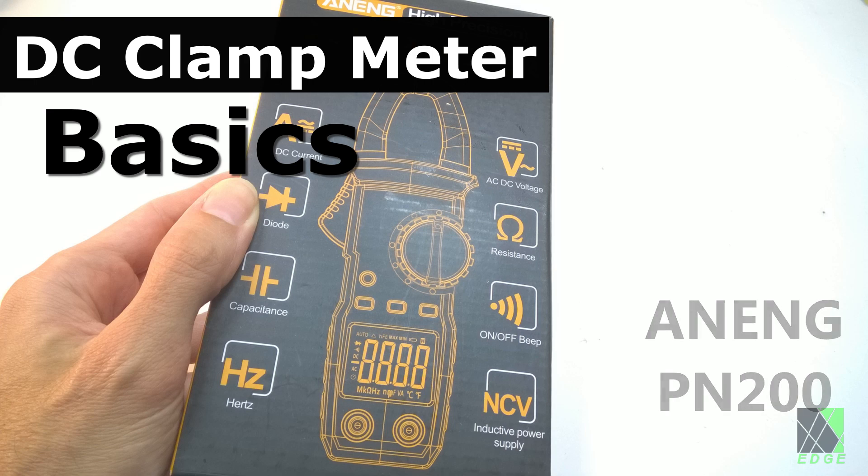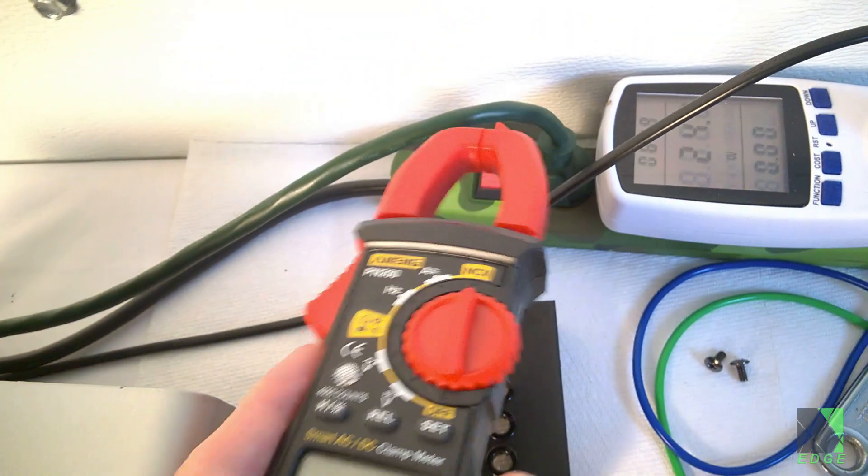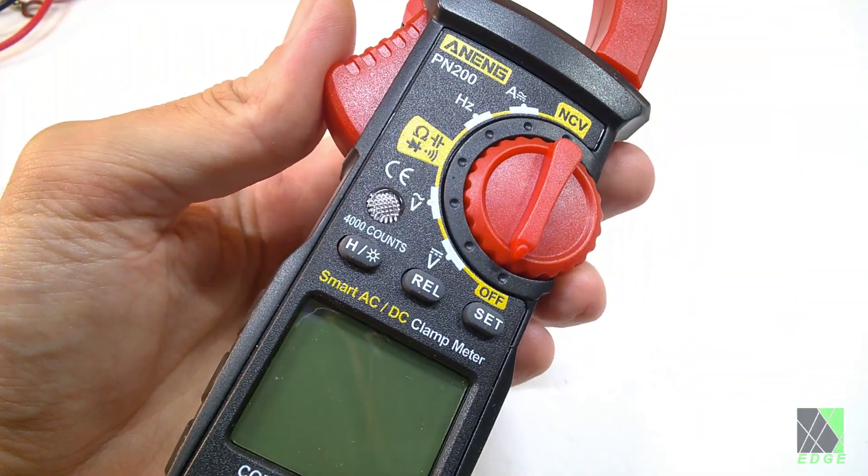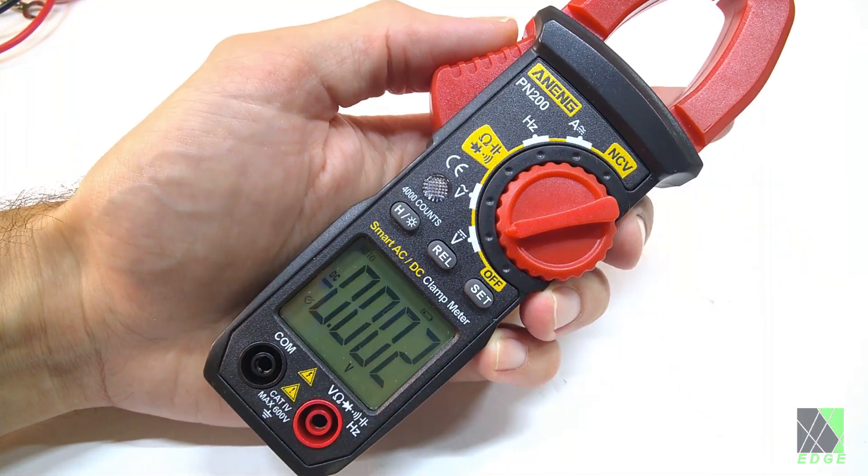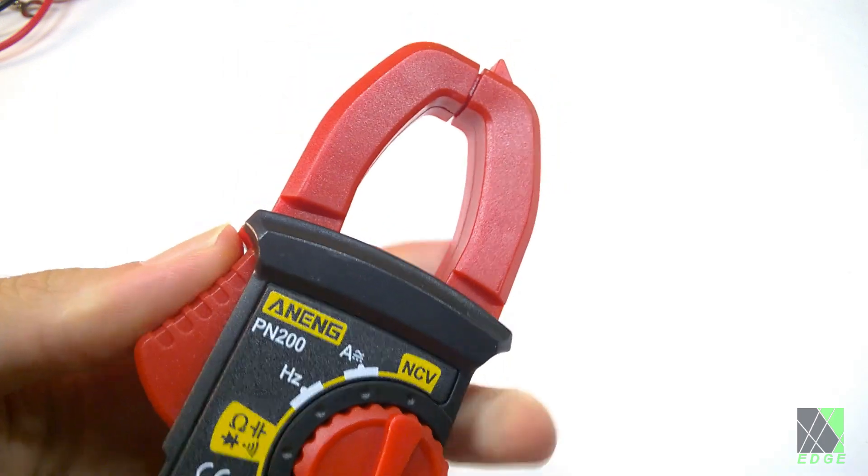A DC clamp meter is one of the most useful tools a DIY solar power enthusiast could own. Here I will demonstrate how to use this meter to quickly test solar power systems, easily answering a variety of questions and solving common problems.